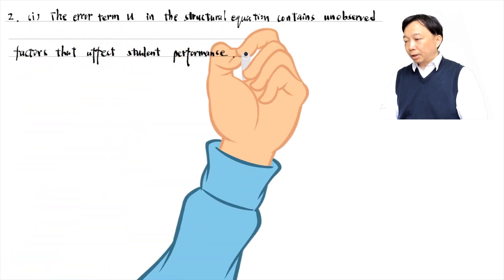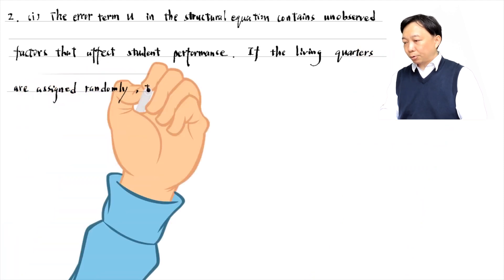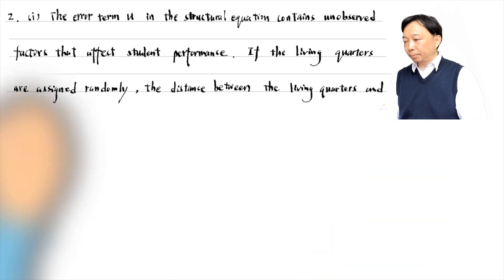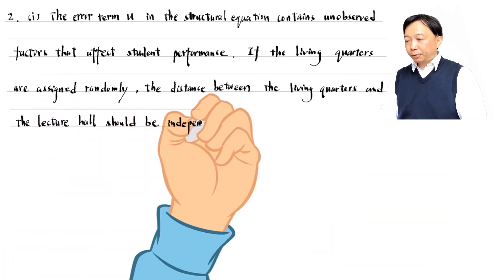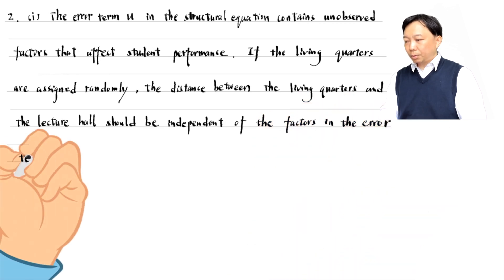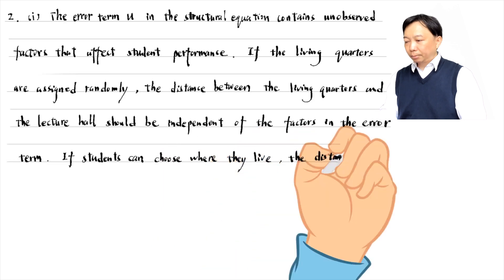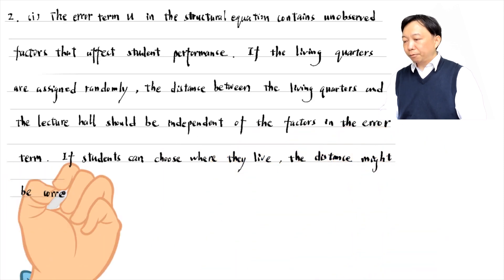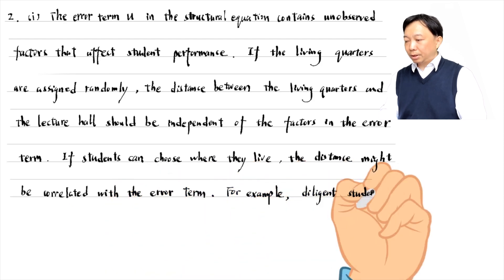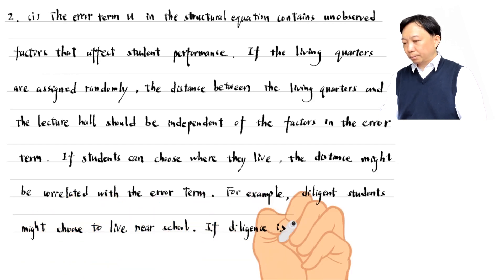If the living quarters are assigned randomly, the distance between the living quarters and the lecture hall should be independent of the factors in the error term. If students can choose where they live, the distance might be correlated with the error term. For example, diligent students might choose to live near the school. If diligence is in the error term, it will be negatively related to distance.